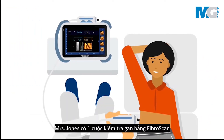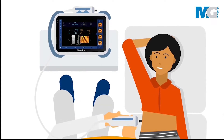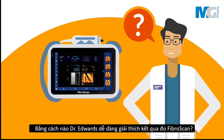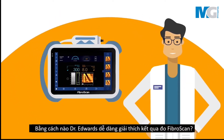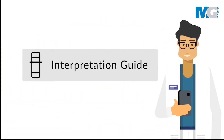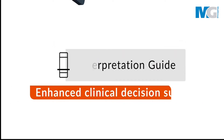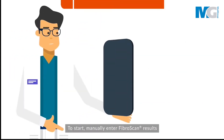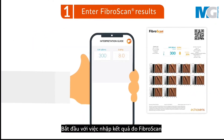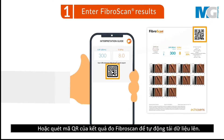Mrs. Jones had a liver examination with FibroScan. How can Dr. Edwards easily interpret the FibroScan examination results? Using the interpretation guide — Enhanced Clinical Decision Support. To start, manually enter FibroScan results or scan the QR code of the FibroScan report for an automatic upload of the examination data.